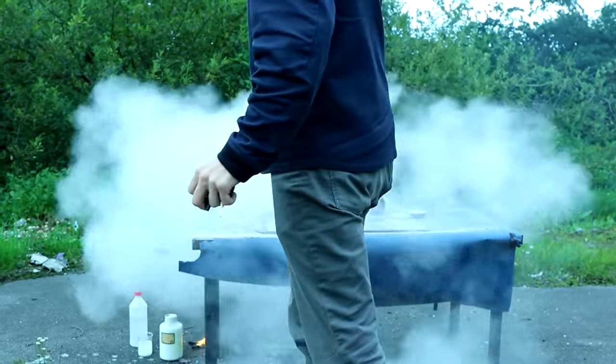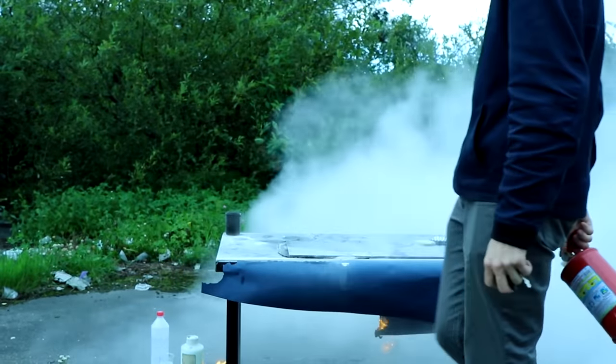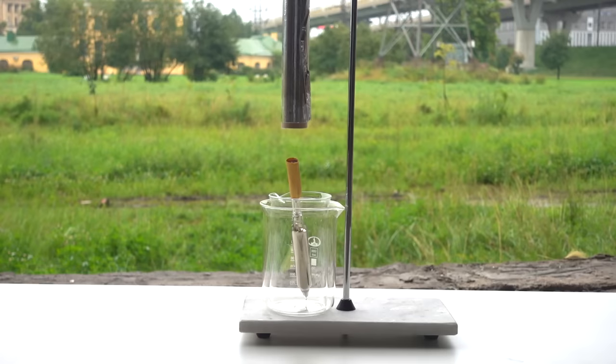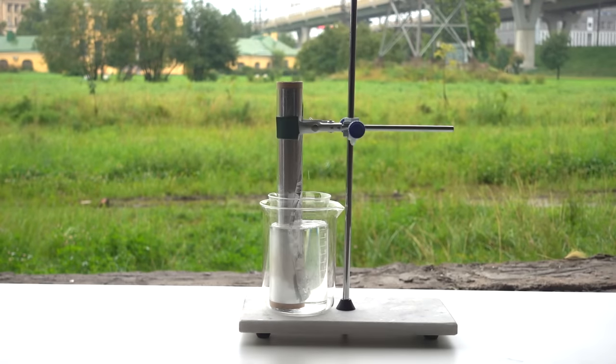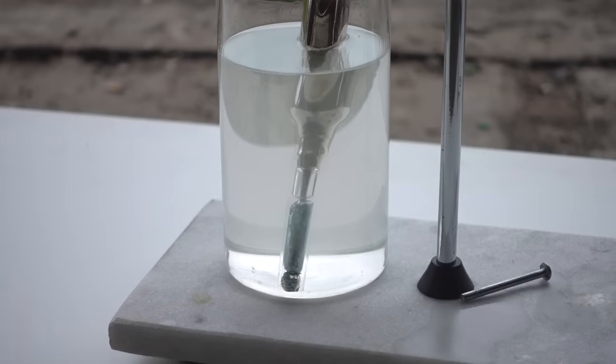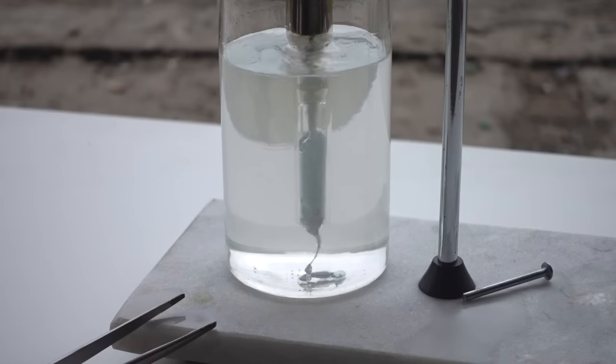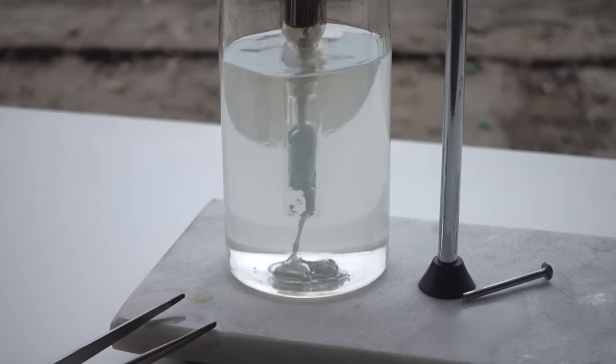For further experiments, we had to buy another vial of cesium. Now I decided to do things differently, breaking the end of the ampoule with a solid cesium and then heating kerosene. This turned out well.